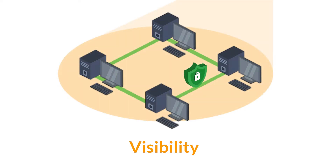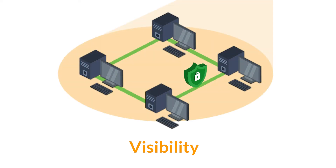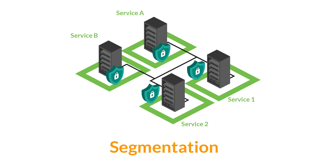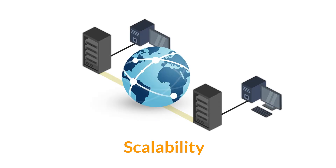Visibility: most industrial network owners just don't know everything that's connected to their network, making their assets vulnerable. Segmentation: industrial networks are normally flat networks without segmentation, unable to block unwanted communication, which makes them highly exposed to cyber attacks. Scalability: deploying equipment across a geographically dispersed environment quickly becomes expensive and difficult to manage.